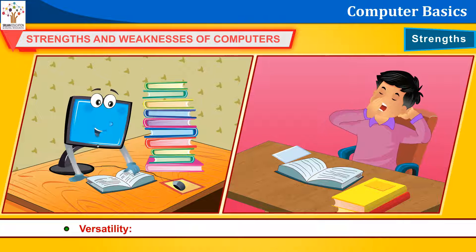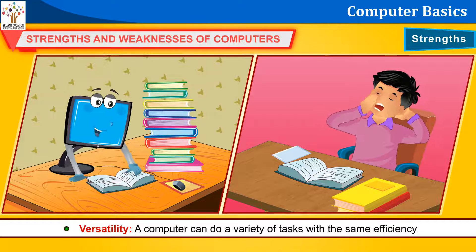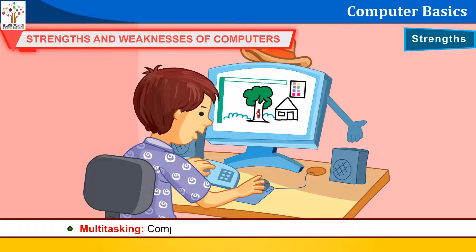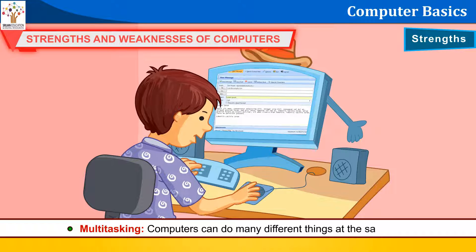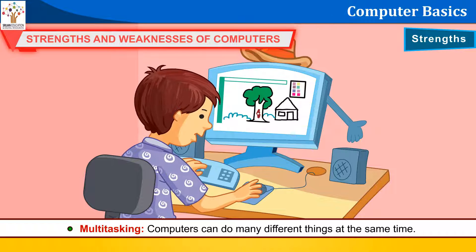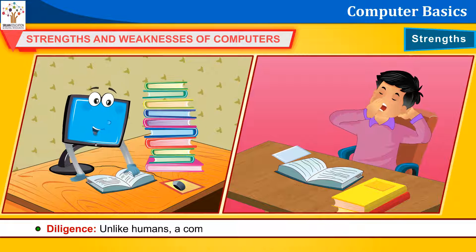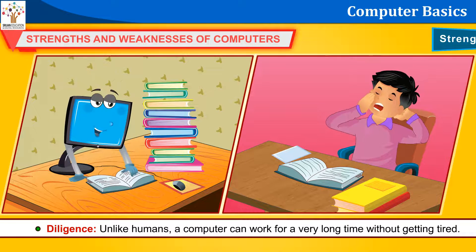Versatility: A computer can do a variety of tasks with the same efficiency. Multitasking: Computers can do many different things at the same time. Diligence: Unlike humans, a computer can work for a very long time without getting tired.